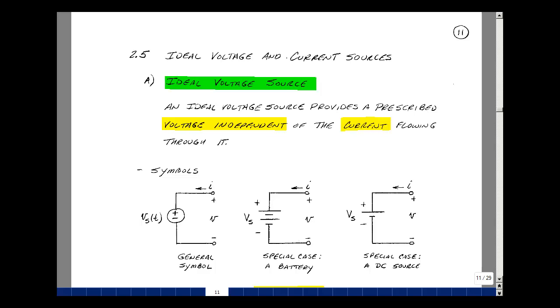This lesson deals with ideal voltage and current sources. You can find these notes in the course ebook in chapter 2 starting on page 11. Let me first define an ideal voltage source.